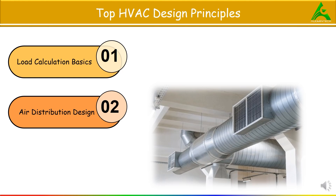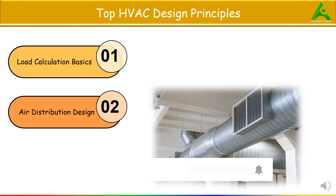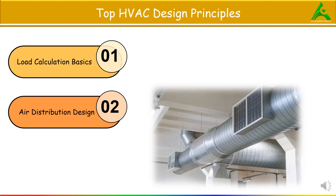For example, in a movie theater, ducts are designed using the equal friction method to achieve consistent airflow. Diffusers are placed above the seating rows directing cool air downwards, and a return air path near the floor prevents air stagnation. The result is a comfortable experience for viewers with no noticeable drafts or warm spots.